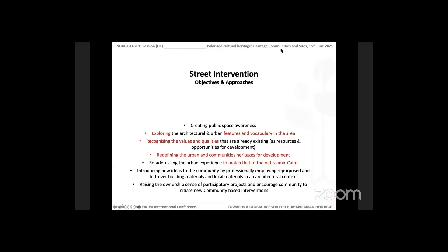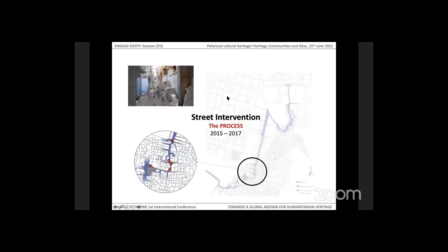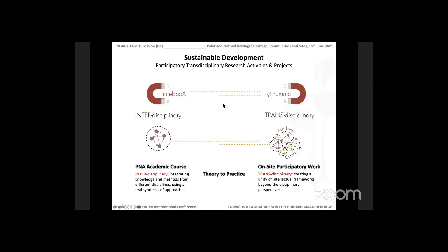Our objectives with the street interventions were, among others, exploring the architectural and urban features of the space, recognizing the values and qualities in their community cultures to preserve as an asset, and also readdressing the urban experience to match that of the old Islamic Cairo. In terms of the process, the process is interplay between the local communities and academia as a main part of Ezbet project, moving together from interdisciplinary work into transdisciplinary participatory work on site.